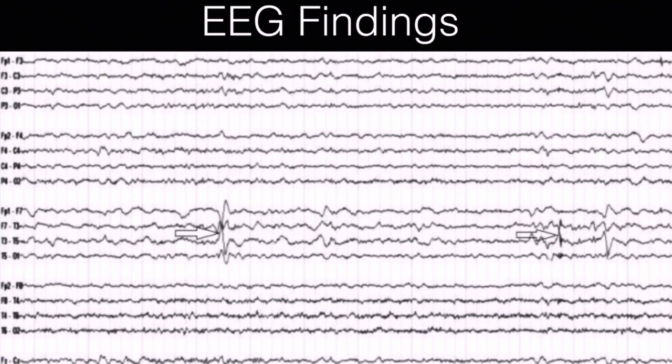Another important neurodiagnostic test for a patient with suspected temporal lobe epilepsy is the EEG. A neurodiagnostic technologist will place electrodes on the patient's scalp, which will pick up the electrical activity in their brain. If you look at the middle of the temporal lobe on the left side, found in the T3 and T5 area — T stands for temporal lobe, odd numbers for the left side and even numbers for the right — you can see a spike and sharp wave and also a phase reversal, which helps localize abnormalities in a bipolar montage.